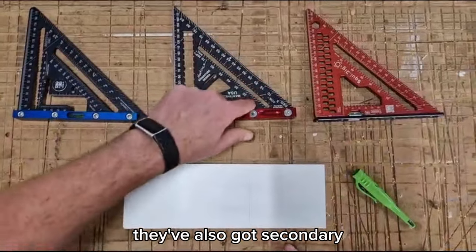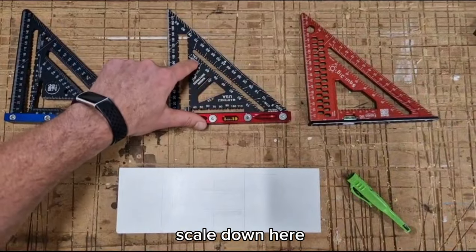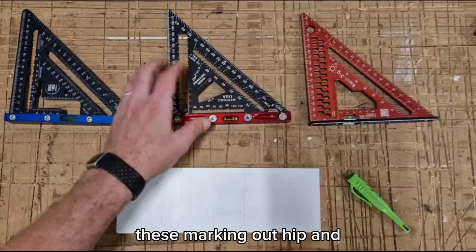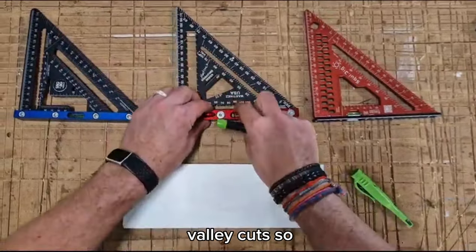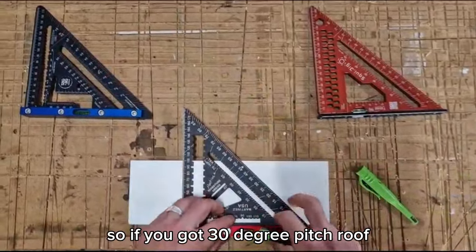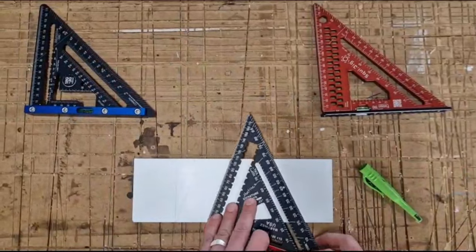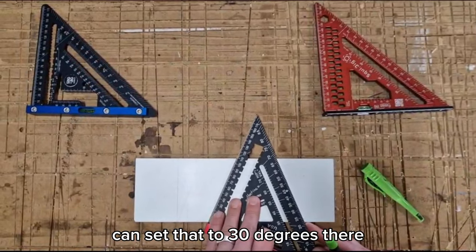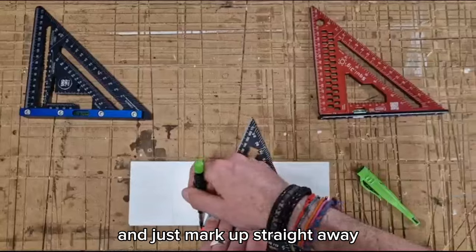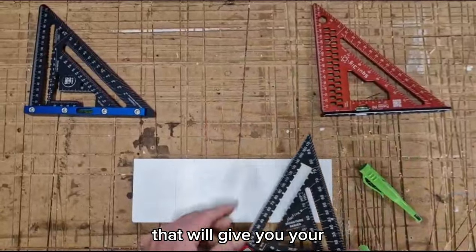They've also got a secondary scale down here. These are for marking out hip and valley cuts. These are all in degrees, so if you've got a 30 degree pitch roof you can set that to 30 degrees there and just mark up straight away. That will give you your hip and valley cut.